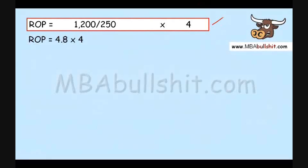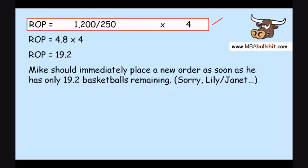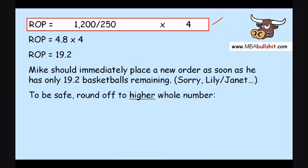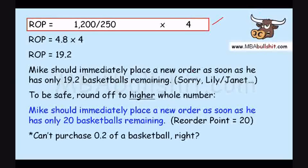We get a reorder point of 4.8 times 4, which equals 19.2. So Mike should immediately place a new order as soon as he has only 19.2 basketballs remaining — meaning both Lily and Janet are wrong. To be safe, we round this up to the higher whole number of 20, since you obviously cannot purchase 0.2 of a basketball. So the reorder point is 20 basketballs.